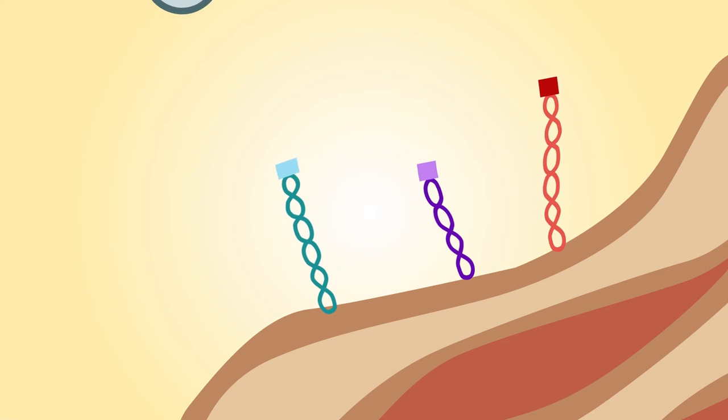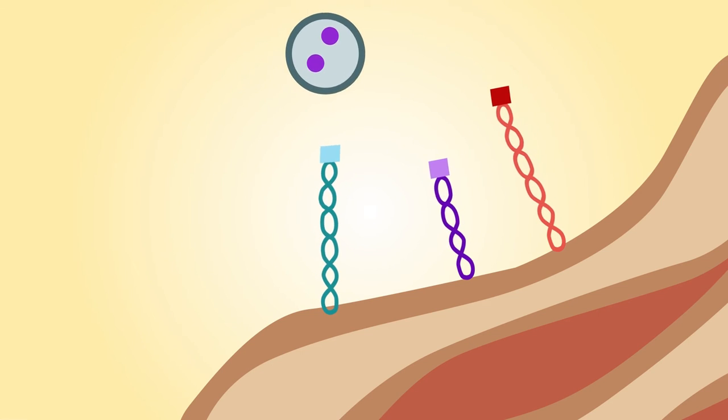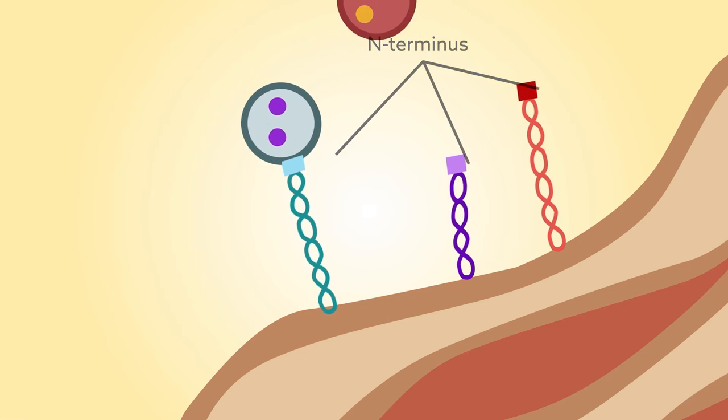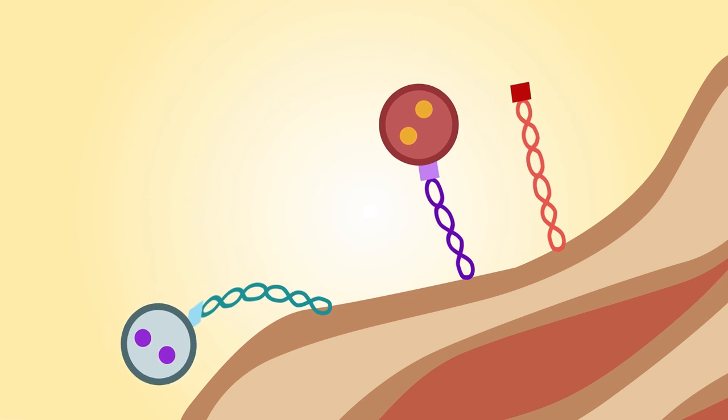The findings suggest that for most Golgins, vesicle capture is handled almost exclusively by the N-terminus, although the precise mechanisms and types of vesicles are likely to vary.